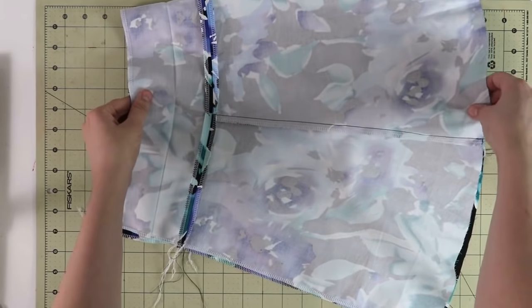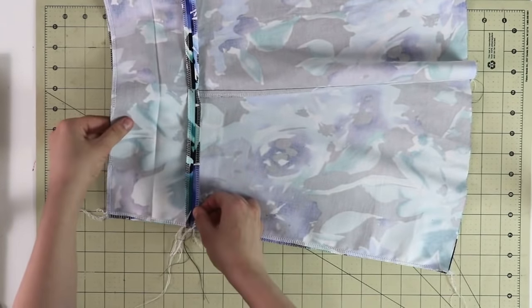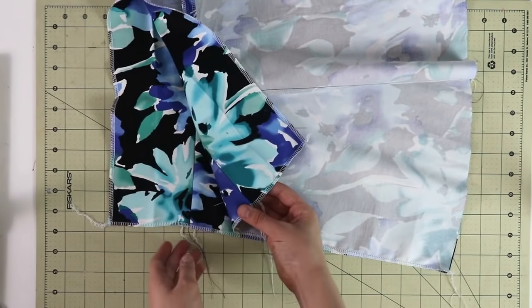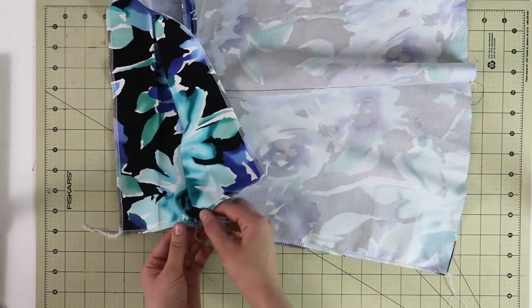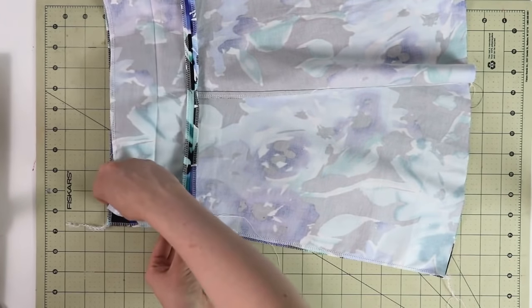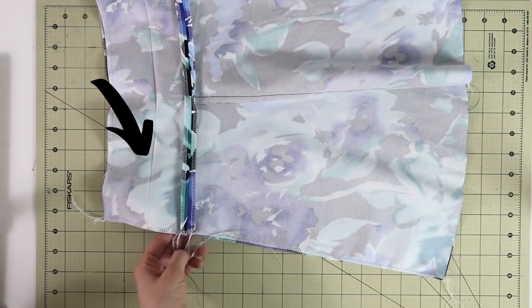Now once that is done, go ahead and place your skirt right sides together, center back seam to center back seam, and now we're going to baste these pieces together, but not from the top to the bottom—from that crease of the waistband that you see all the way to the bottom of the skirt.